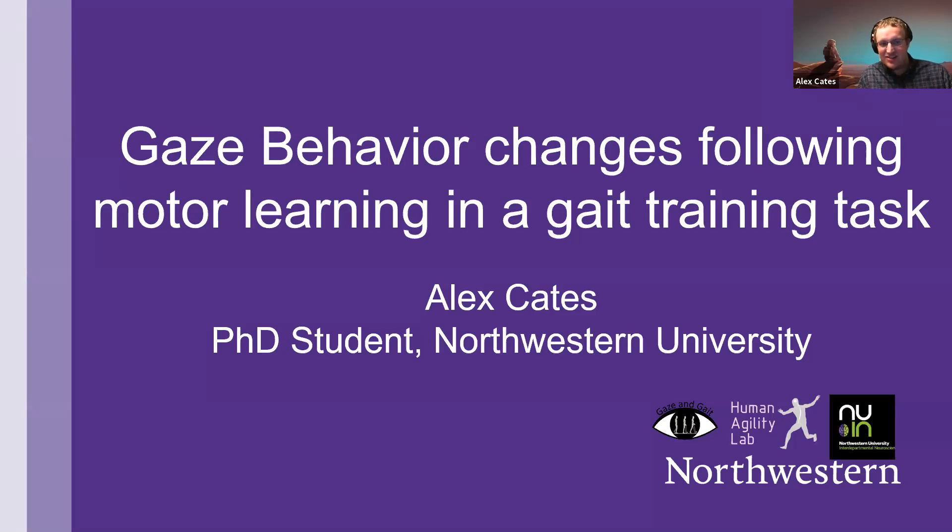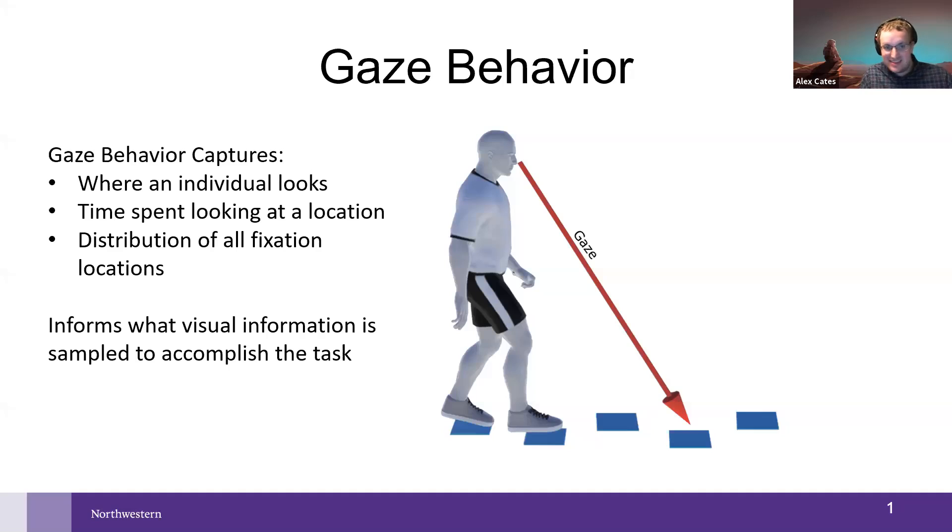As mentioned, I'm going to talk about gaze behavior and how it changes following some motor learning in gait training. So to start off, I just want to go through what is gaze behavior. Gaze behavior is basically where you look, and in particular, it's where you're looking when you're trying to accomplish some sort of motor task. For me, I study that in walking. This captures where an individual looks, how much time they spend looking at different locations, and the really nice way to show this is the distribution of fixations. It really informs what visual information is sampled to accomplish a task. It's an insight into what individuals are relying on to accomplish a task.